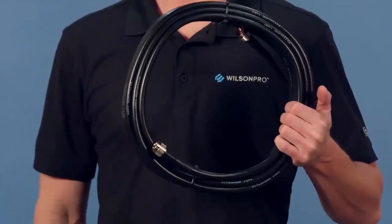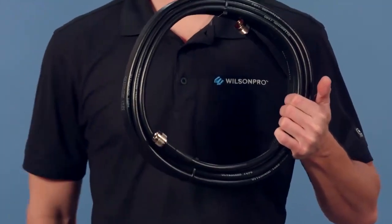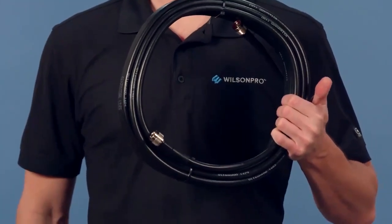Throughout the video, I reference signal loss in cable. When I do so, I'm referring to Wilson 400 cable, which has a loss of 3.5 dB at 700 MHz and 6 dB at 2150 MHz per 100 feet.